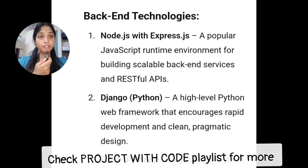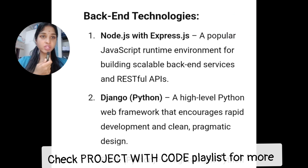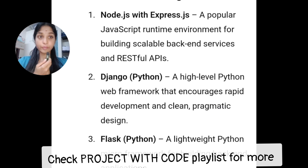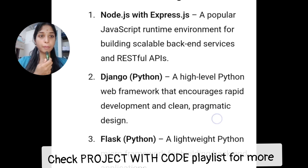Backend is also very popular. MERN is also known as Node.js and Express.js — this is the RESTful API backend service. Next is Django, a high-level Python framework. In case you can skip Python. There is also Flask, a lightweight Python framework.